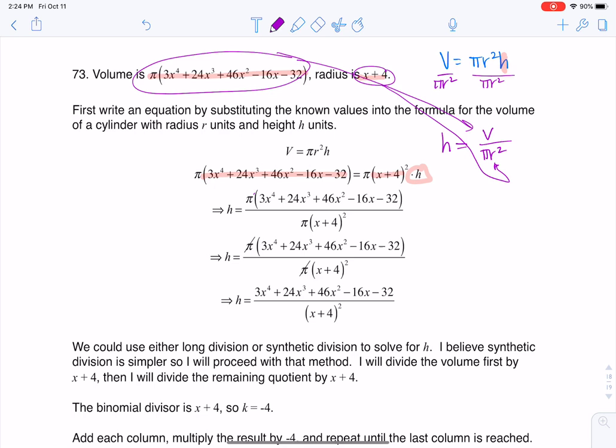The pies are going to cancel, and that's why my height boils down to that ratio, that fraction. Once you get to a fraction, you have a couple of options. I can do long division or I can do synthetic division.